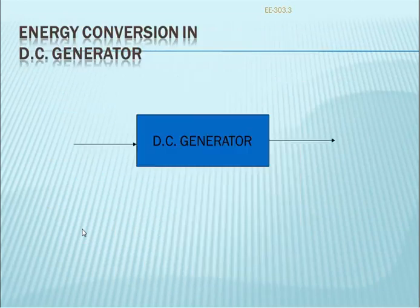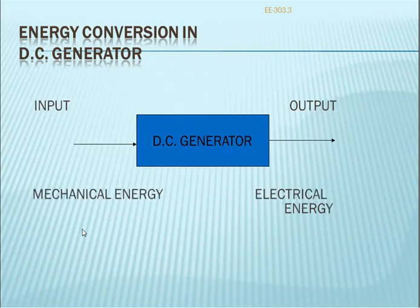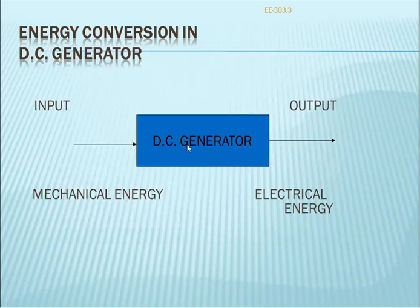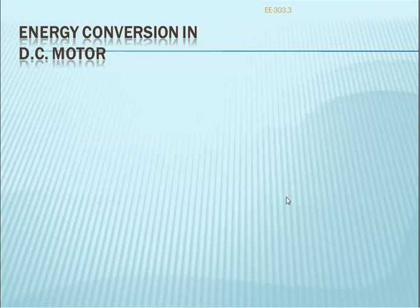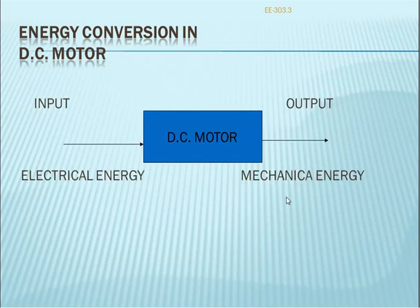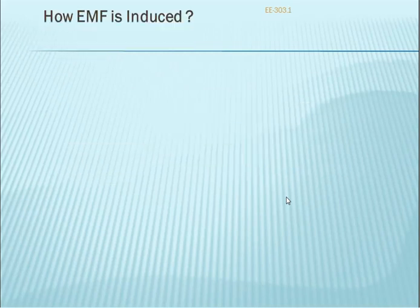Energy conversion in the DC generator: the input is mechanical energy and the output is electrical energy. For a DC motor, the input is electrical energy and the output is mechanical energy.